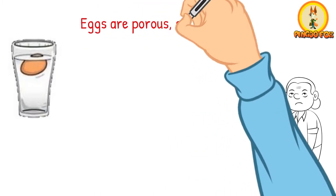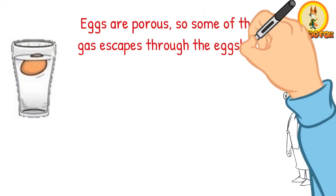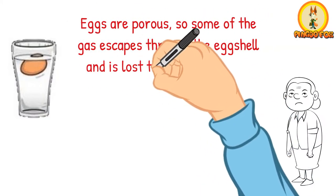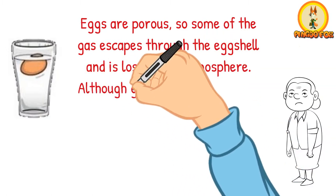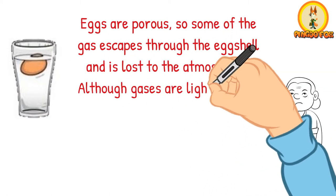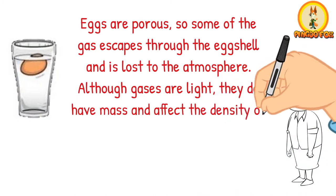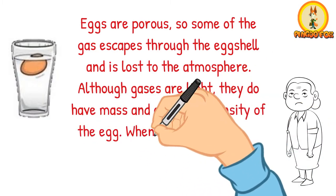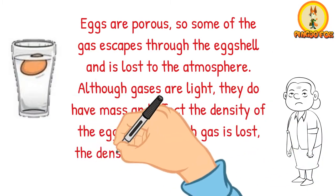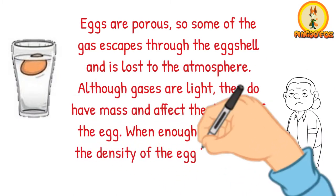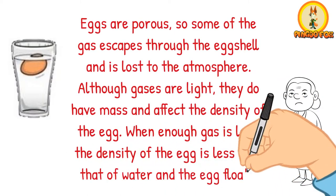Eggs are porous, so some of the gas escapes through the eggshell and is lost to the atmosphere. Although gases are light, they do have mass and affect the density of the egg. When enough gas is lost, the density of the egg is less than that of water, and the egg floats.